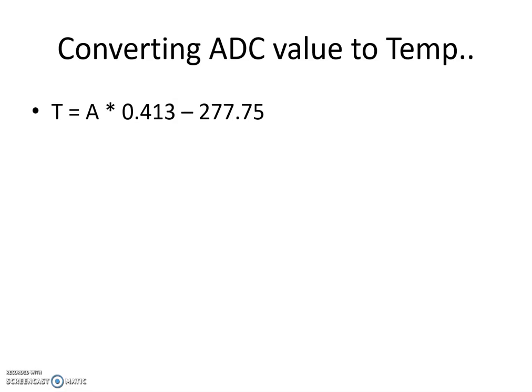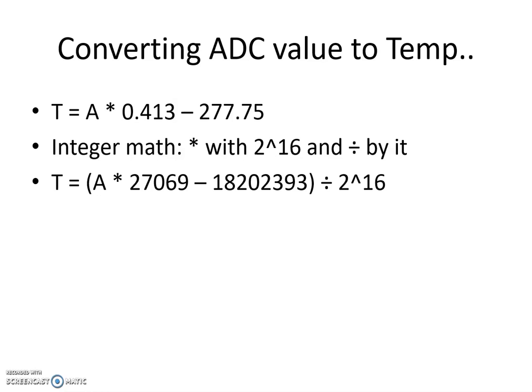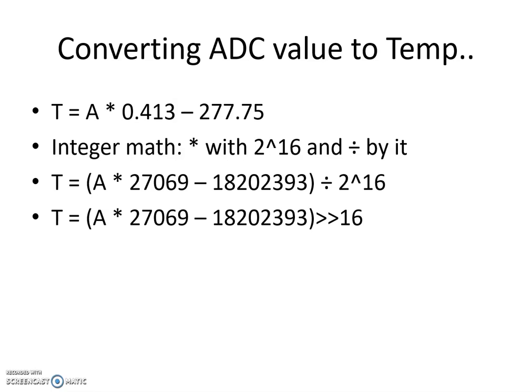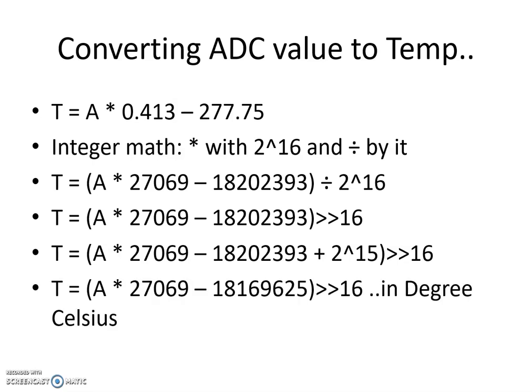This formula uses floating point, which is slow and requires more flash. Therefore we use integer math: we multiply and divide by 2^16. Using right shift instead of division and left shift instead of multiplication, we convert the high word to the low word. Because we are using integer math, rounding becomes essential, so we add 2^15 (half of 2^16) to the numerator to improve rounding. This gives us our final temperature value in degrees Celsius.